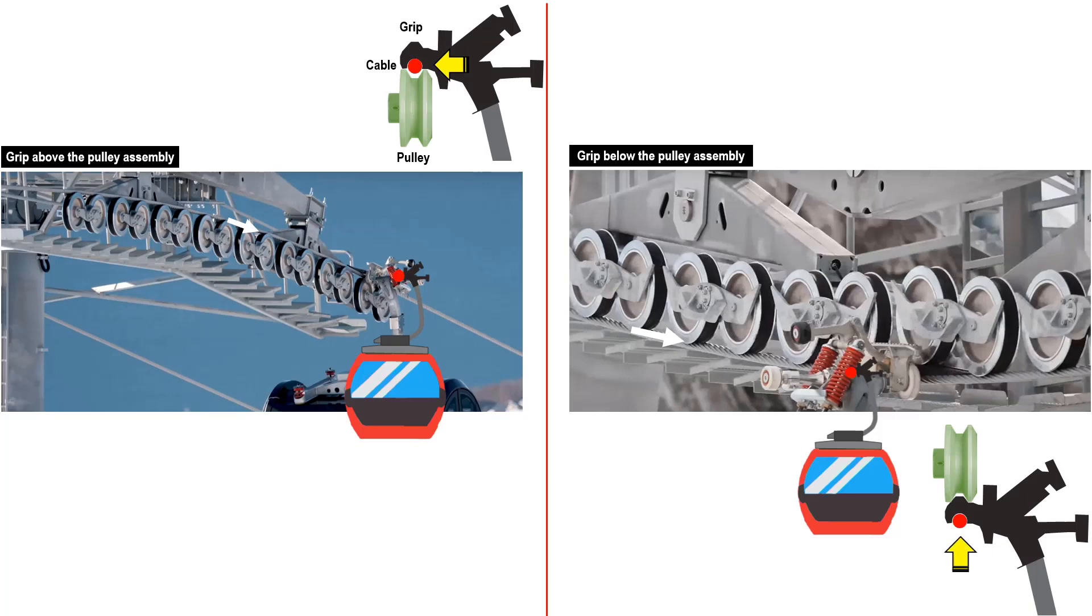This red dot represents the cable. The decision where to position the grip assembly, whether it is above or below, will depend on the position of the tower. The objective of the positioning of the grip assembly is always to keep the cable in tension so that it will not derail from the pulley assembly.